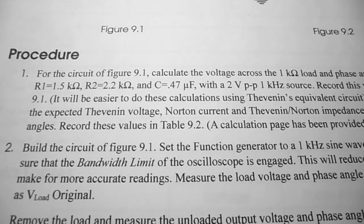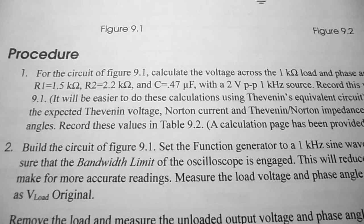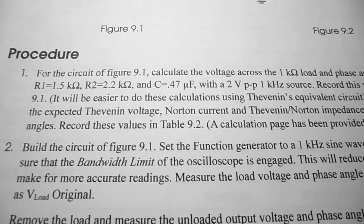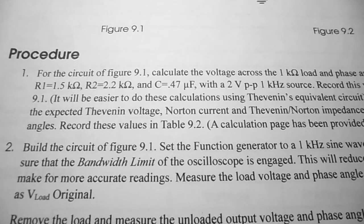Under procedure, step one: for the circuit of figure 9.1, calculate the voltage across the 1k ohm load and phase angle using R1 equal to 1.5k, R2 equal to 2.2k, and C equal to 0.47 microfarads, with a 2 volt peak-to-peak 1 kilohertz source. Record this in table 9.1. Also calculate the expected Thevenin voltage, Norton current, and Thevenin-Norton impedance with phase angles, and record these in table 9.2.